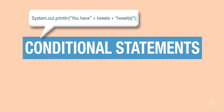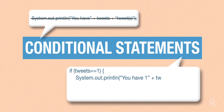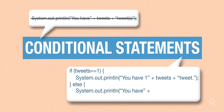We need to be able to sometimes do one thing and sometimes do something else. The code that does this looks like this: if tweets == 1 — notice two equal signs, not one — System.out.println("You have 1" + tweets + "tweet"). Else, System.out.println("You have" + tweets + "tweets") with an S.